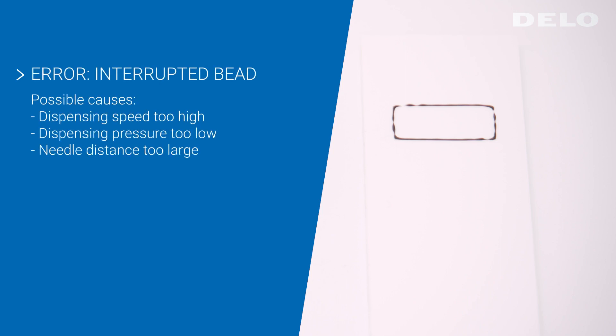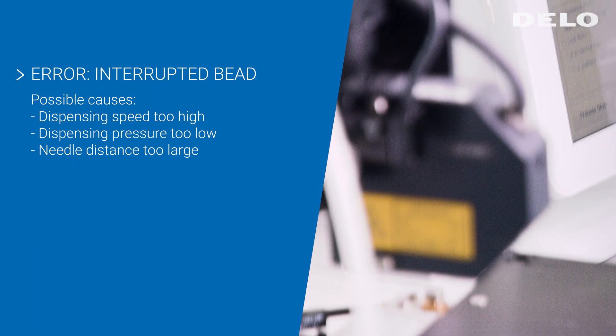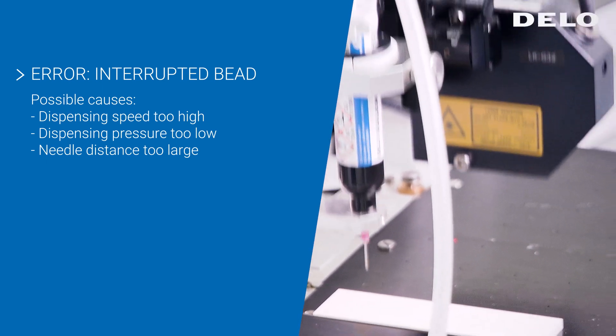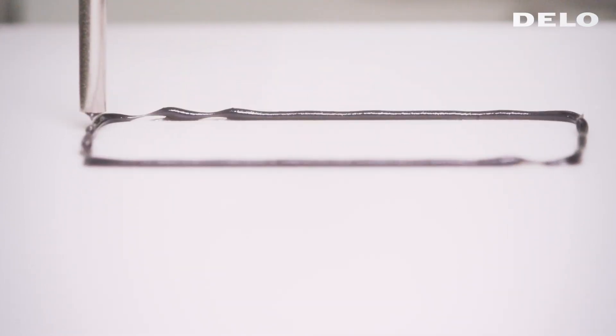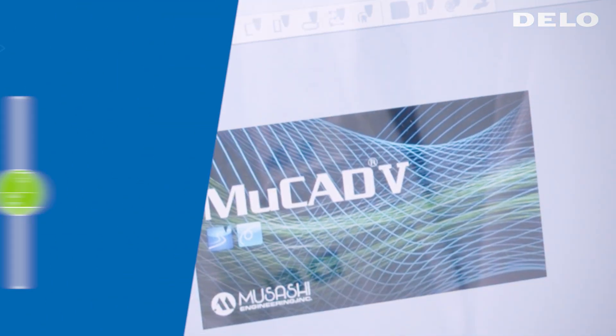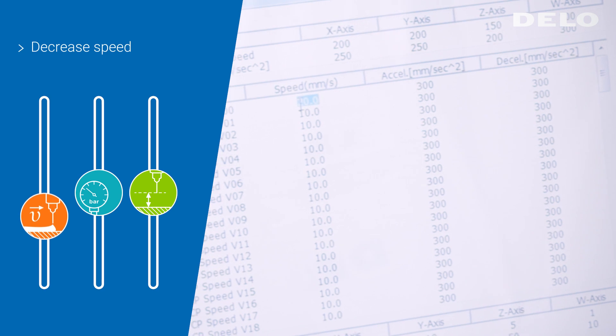An interrupted dispensing bead can have the following causes: dispensing speed too high, dispensing pressure too low, or needle distance too large. Proceed as follows to solve the problem: reduce the dispensing speed.